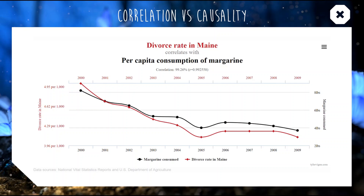Here we have some data recording divorce rates in Maine, the American state, and per capita consumption of margarine over a 12-month period. These two have a correlation value of 0.99 — they're almost perfectly correlated.